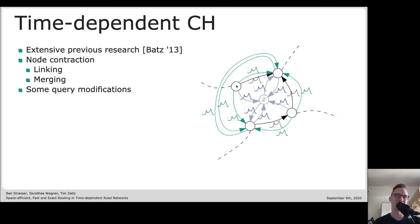Then we need to merge two such functions - find the minimum of two such functions, which is still a piecewise linear function. It's called merging. For the query, we also need to do some modifications. The backward search doesn't work as easily anymore because we don't know the arrival time at the target node, so we can't just do a Dijkstra search from there. But that's all challenges that can be worked around.